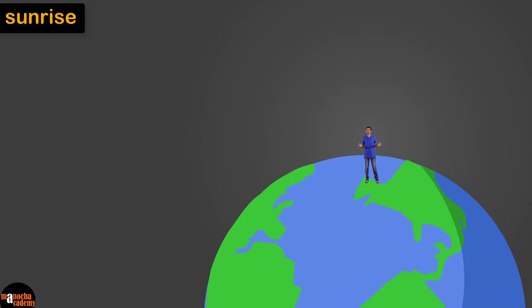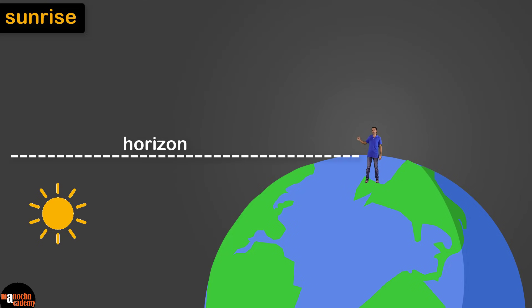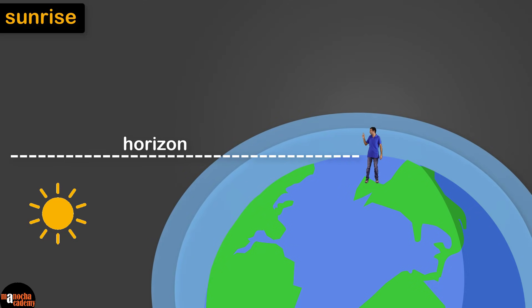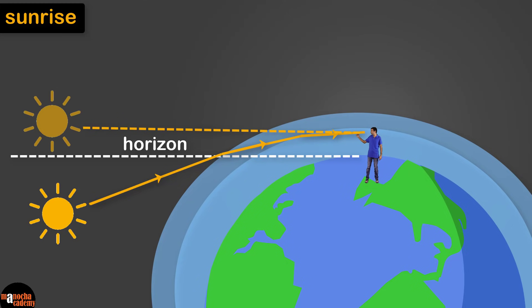Let's zoom out from this scene and look at you standing on the Earth. Imagine you're standing on the Earth and looking at the sunrise. If there was no atmosphere, we would be able to see the Sun only after it came up the horizon. But the layers of the atmosphere cause refraction of light. The sunlight passes from less dense to more dense layers of air — the light bends towards us and it reaches our eyes, so we are able to see the Sun even though it's actually below the horizon.